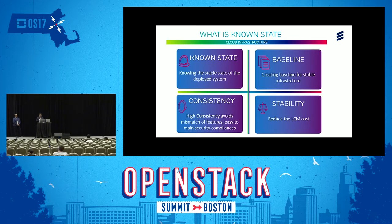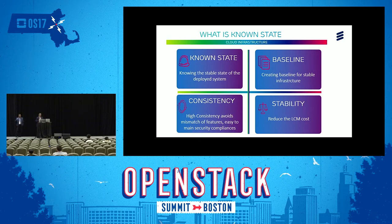Making sure that the baseline is implemented into the different sites in the infrastructure is key. Creating a baseline is an important aspect in achieving known state. A baseline can be created by taking a snapshot from the deployed site — by snapshot I mean gathering the data from the deployed site, doing an analysis on the captured data, and based on the analysis finalizing the baseline for the deployment. Known state basically aims at maintaining consistency in the network.